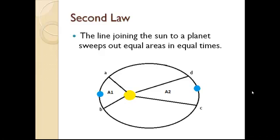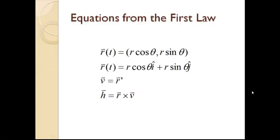We'll derive this law in four steps, but before we begin, here are some of the equations established from the proof of the first law, which are necessary for the second law. R is a position vector of the planet with respect to time in the x and y coordinates. We can write this vector in polar coordinate form, where R cos θ is in the î direction and R sin θ is in the ĵ direction. We also know that the derivative of the position vector r is the velocity vector v. And finally, vector h equals the cross product of the vectors r and v.